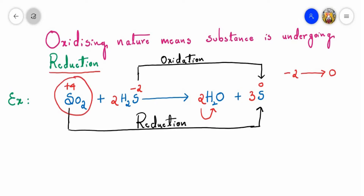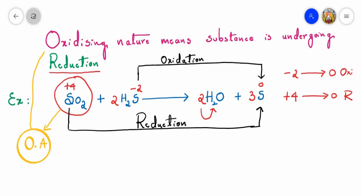On the other hand, sulfur with a plus four oxidation state is getting reduced — that is called reduction. So we can write: from plus four to zero, that is reduction. A substance which is undergoing reduction is called an oxidizing agent, so SO2 is acting as an oxidizing agent, showing oxidizing nature — SO2 with plus four oxidation state is getting converted to zero.